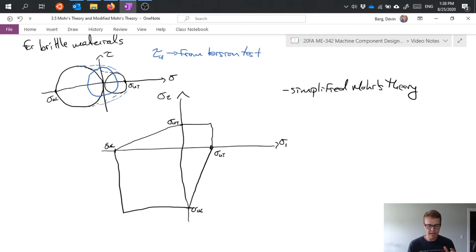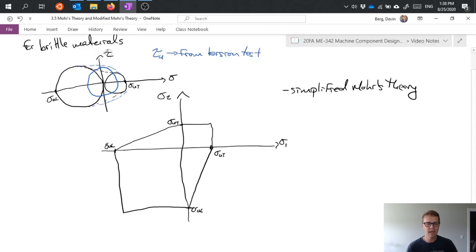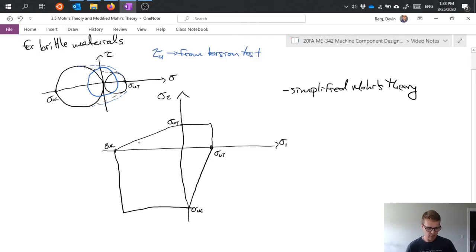Now if I want to take in the additional bits of information and kind of really flesh out the theory or the full analytical expression I would actually have curves that look something like this. I'll see if I can draw these in so kind of these blue dashed lines and this would be what we call the true Mohr's theory